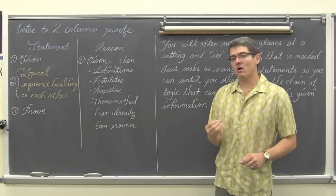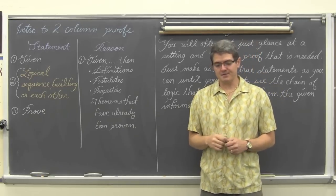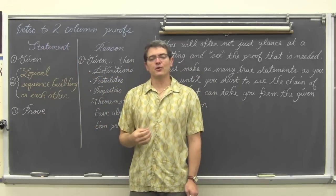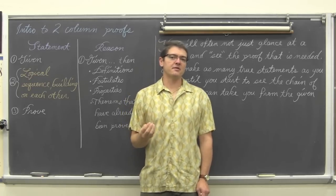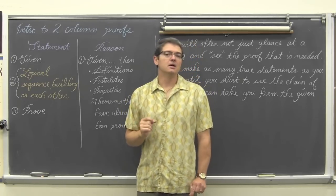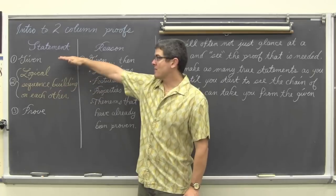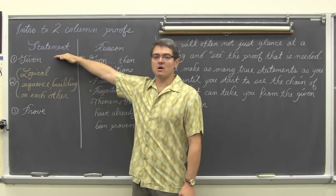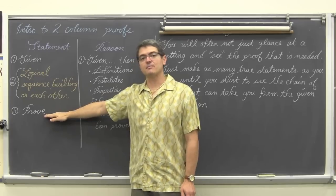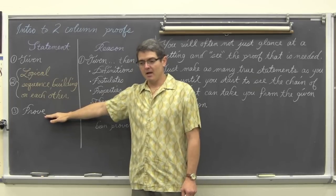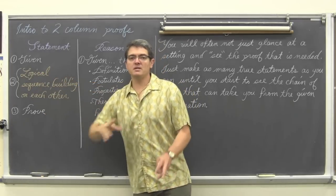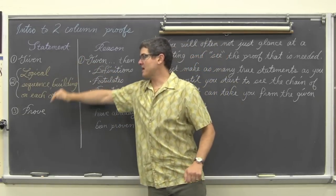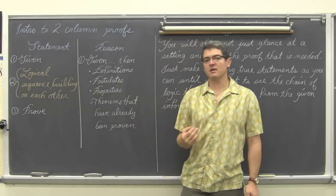These are how our proofs are going to look in geometry class, where we have a column for statements. When we do these geometric proofs we are going to be given a piece of information and then asked to prove something else. The given information is always going to be the first line or statement in our two column proof, and what we are being asked to prove will be the last statement. In between there we need to build logical steps, kind of like linking a chain together, getting from the given statement to whatever we ultimately want to prove.